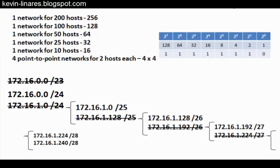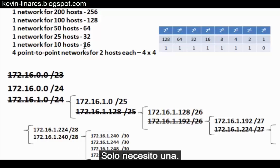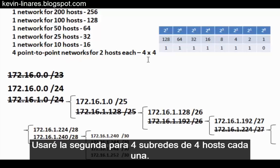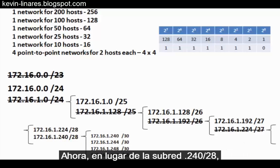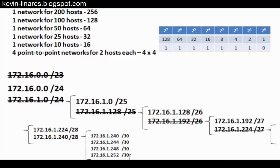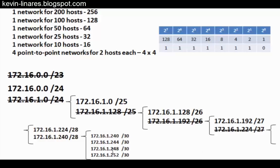From here, I take the second of these two 16-host subnets — I only need one. The second one I'll use for four subnets of four hosts each. So instead of the 172.16.1.240/28 subnet, I now have four /30 subnets: the 240/30, the 244/30, the 248/30, and the 252/30 subnets.